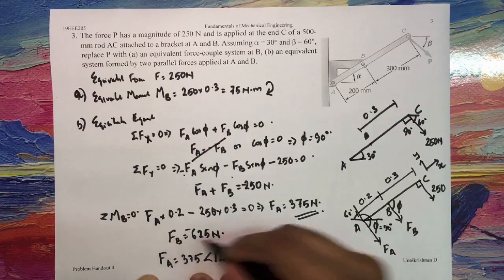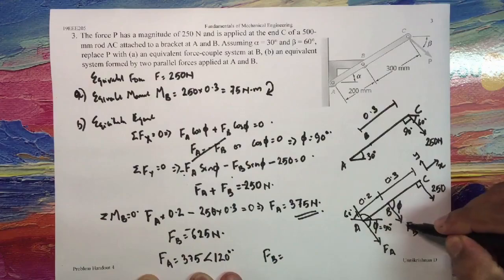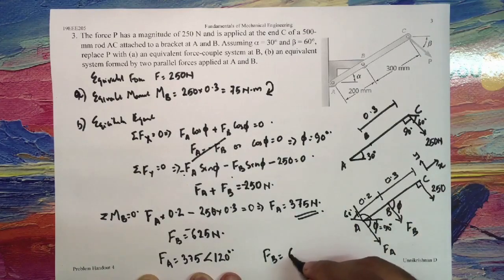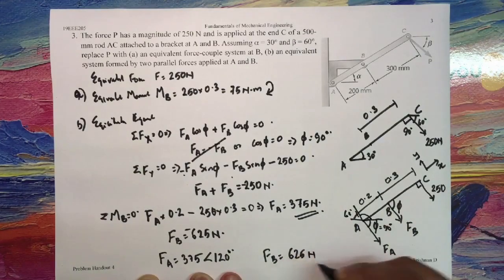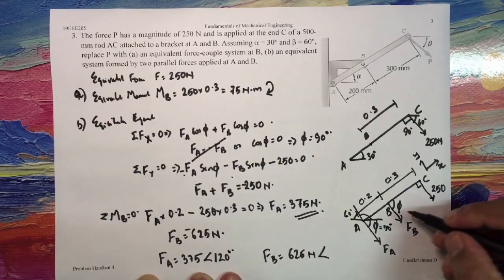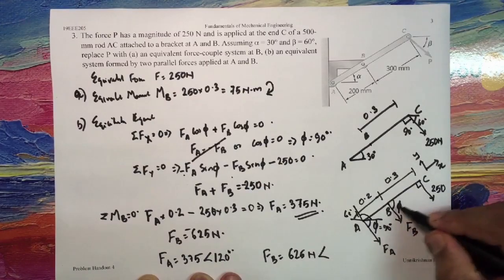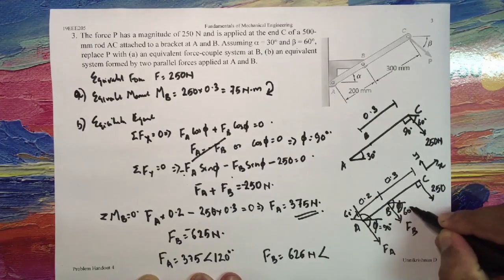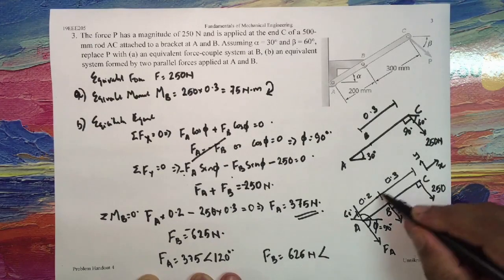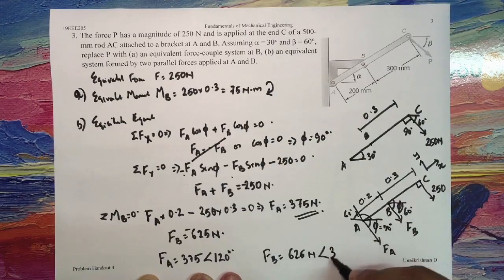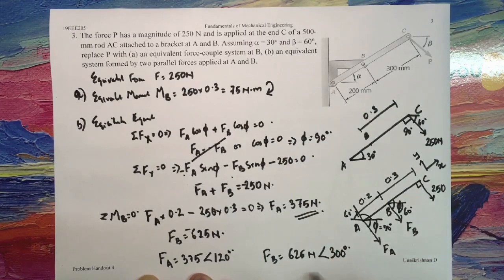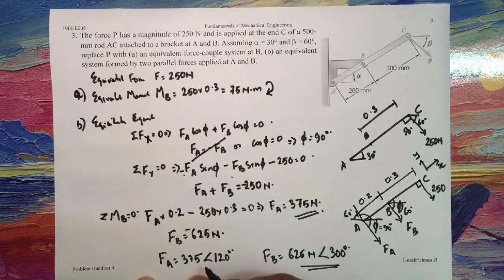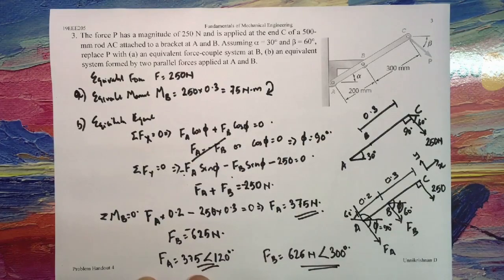And FB would be 625 Newtons, minus 625, so that means it is in this direction. 625 Newtons acting at an angle of, if you see this is 60, so that means 360 minus 60, so acting at an angle of 300 degrees. So I have my answer for my part (b) as well.